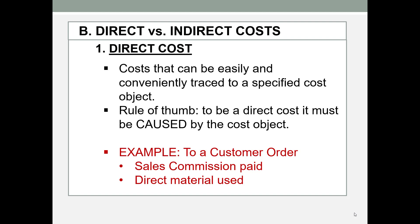They would also be able to identify the material used in producing that customer order. It's important to identify that the cost object here is the customer order. If you did not have that customer order, you would not pay that sales commission, and you would not use those materials.